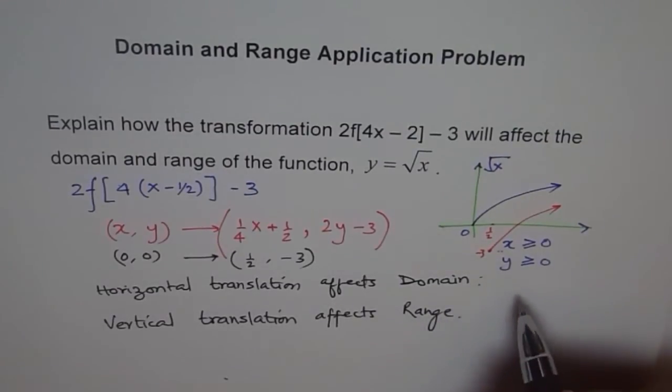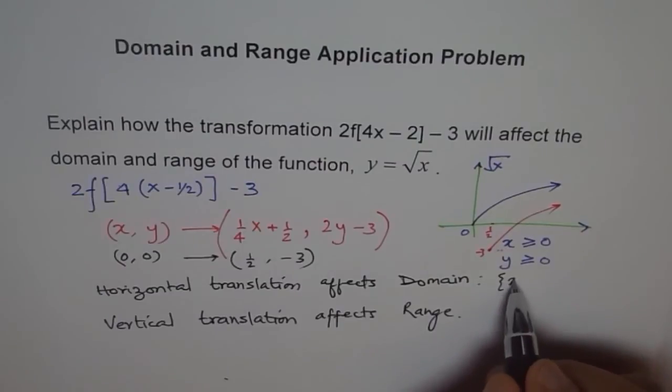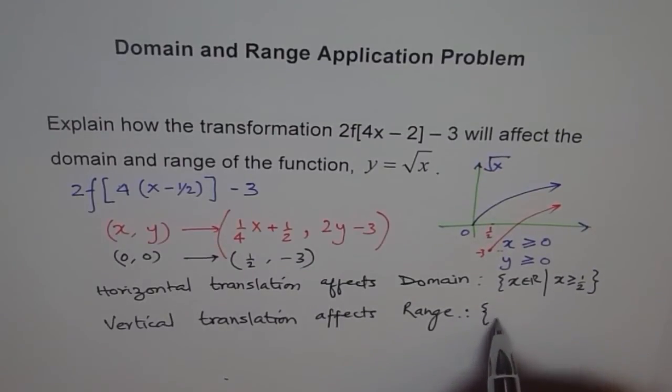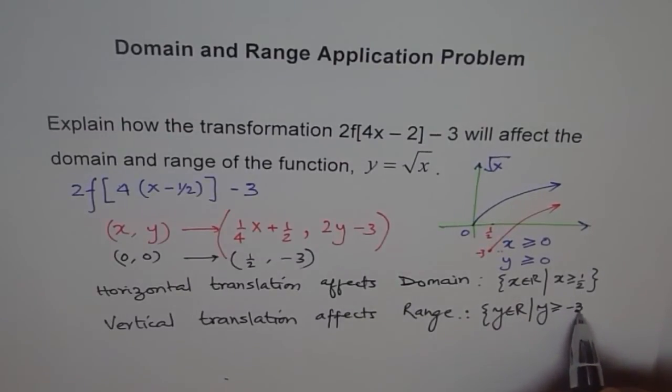And how does it affect? So what really happens is that the domain, instead of being greater than 0, now becomes greater than half. So domain becomes x belongs to real numbers, such that x is greater than equal to half. And as far as range is concerned, it becomes y belongs to real numbers, where y is greater than equal to minus 3.